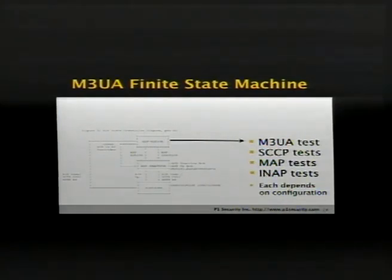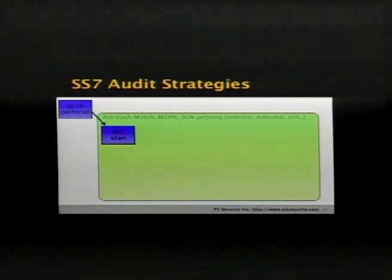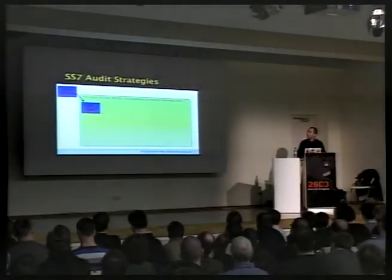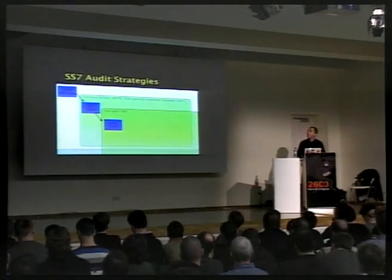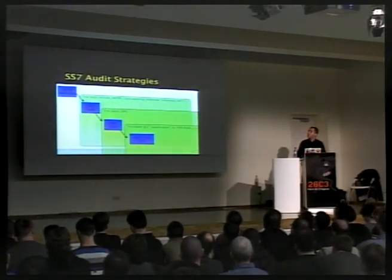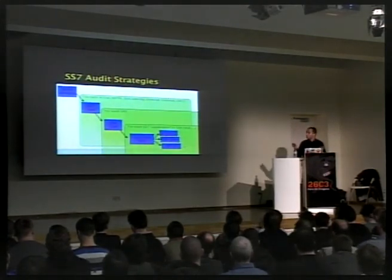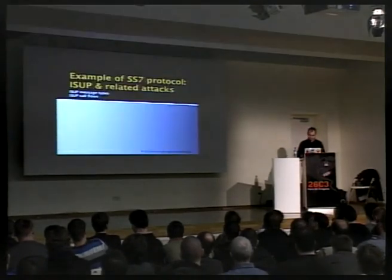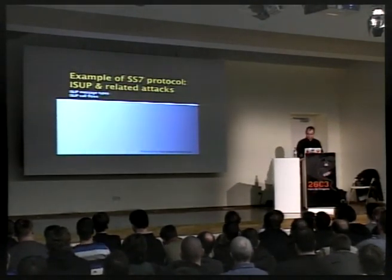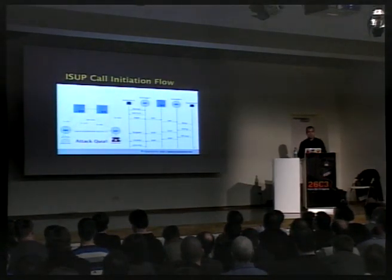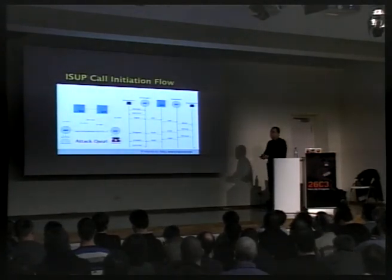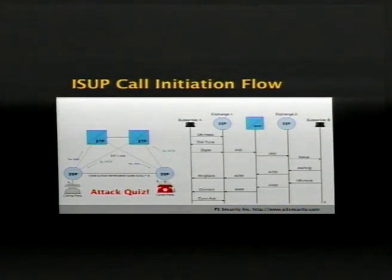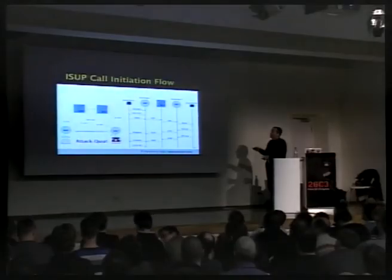The general approach is: do an SCTP port scan, and for each of the endpoints, start to do a DPC scan, and from that try to see which services are available, and for that, which applications you can run — basically vulnerability scanning like everyone does. Now, real attacks. Here is a standard behavior of an ISUP call. I pick up my fixed-line phone, compose digits to some destination, and at the SS7 level this is what happens.